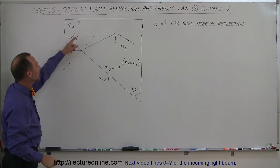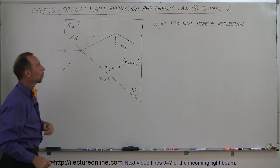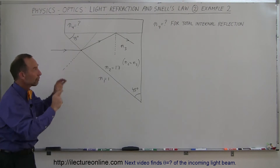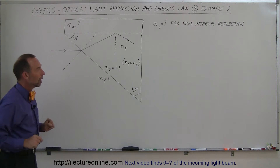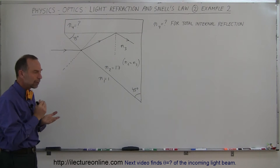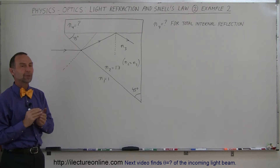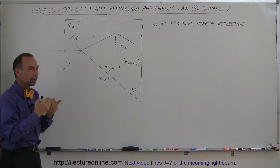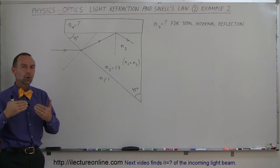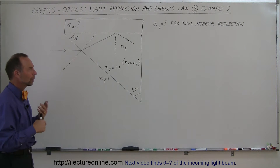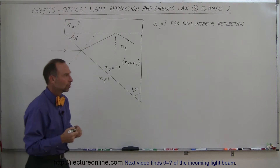We want total internal reflection, so what index of refraction will be required for the light to be reflected rather than refracted into the other material? What should the index of refraction be of that material above the glass — that's what we're looking for. So how do we go about doing that?